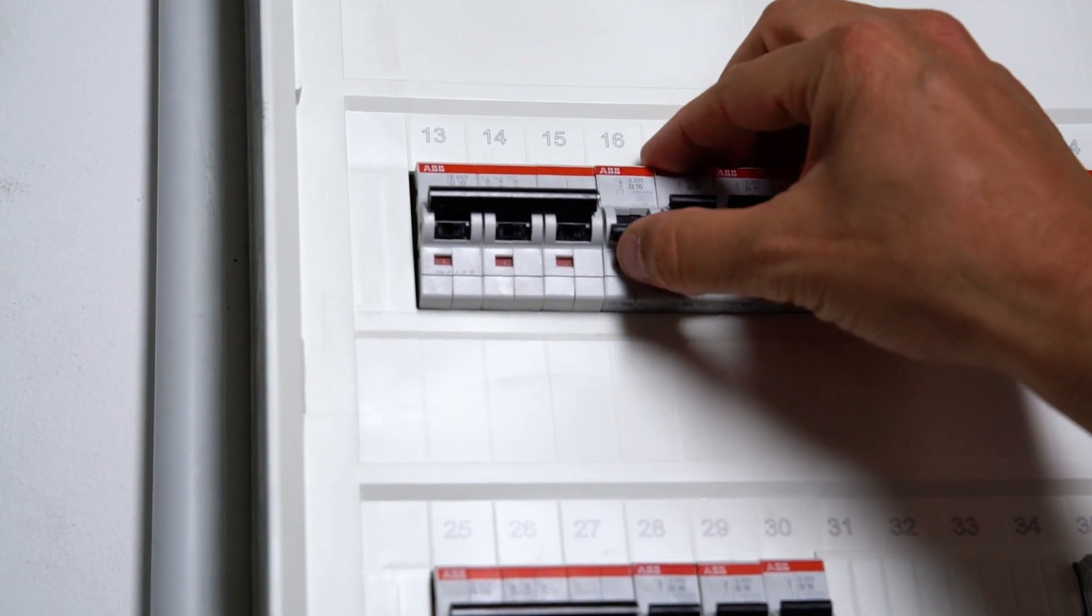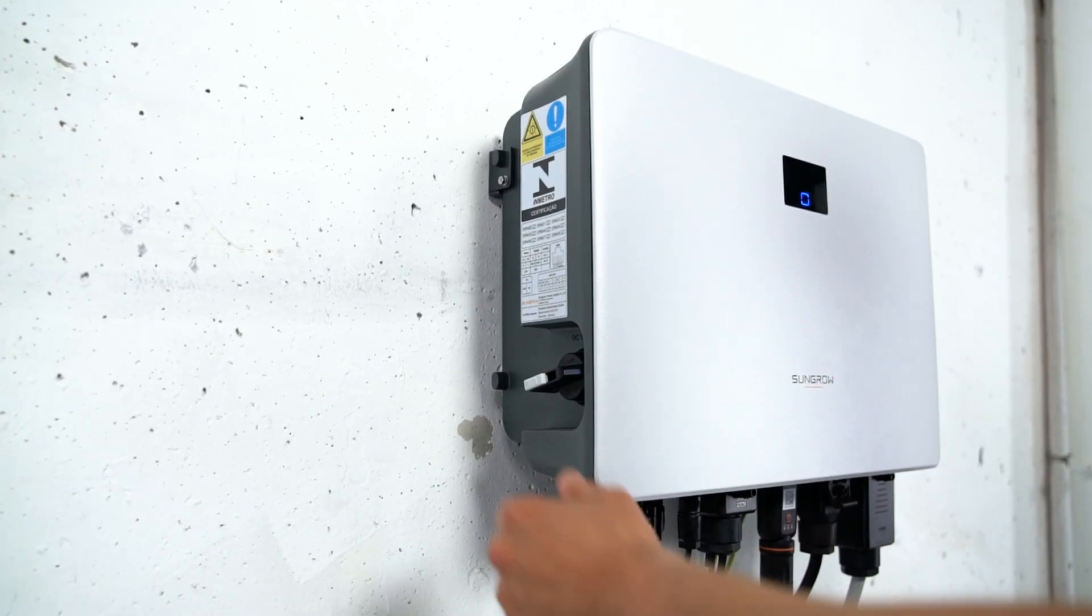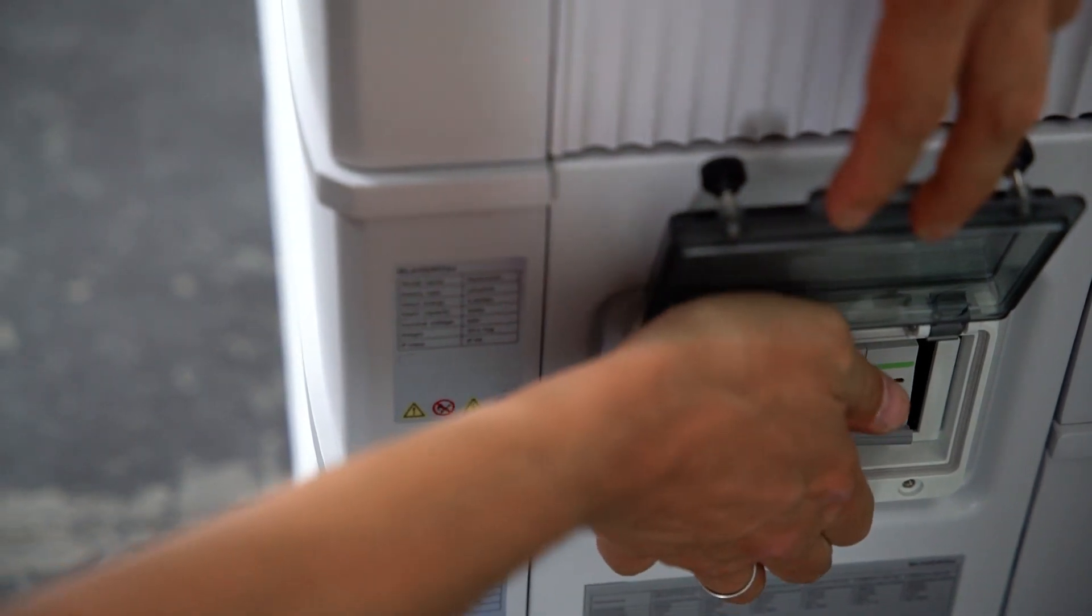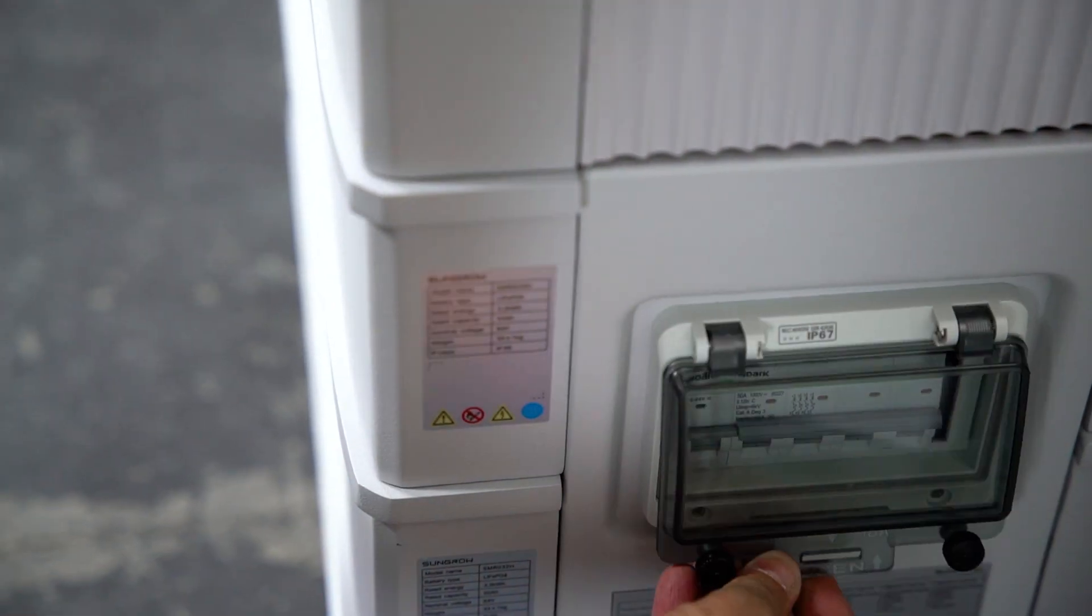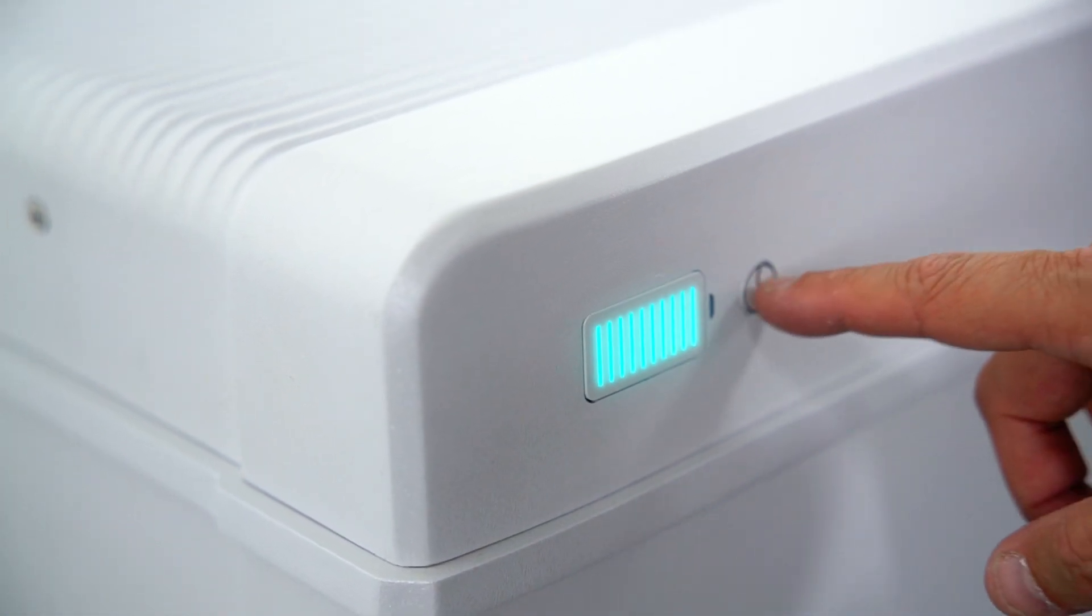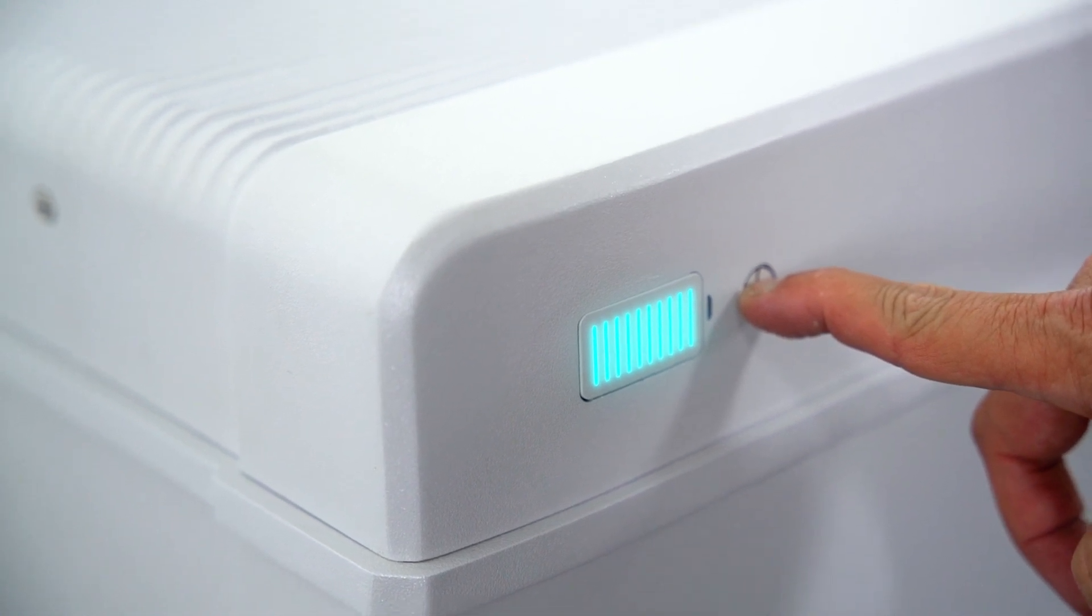First, switch on the AC circuit breaker and second, the DC circuit breaker on the left side of the inverter and on the right side of the battery. Wait for about 10 seconds till the status LED on the battery starts blinking. Press the power button once. When the light shines continuously, the battery is ready for use.